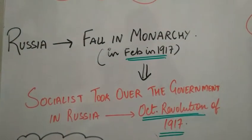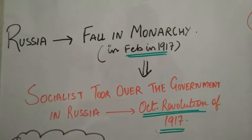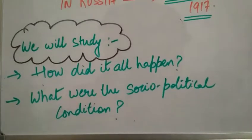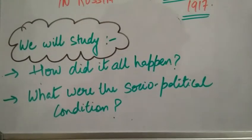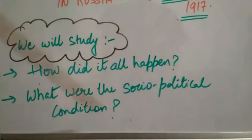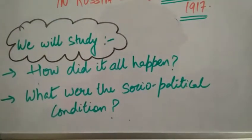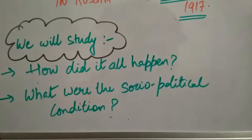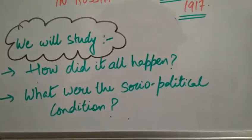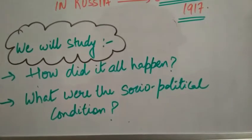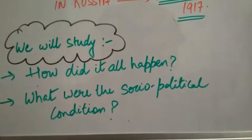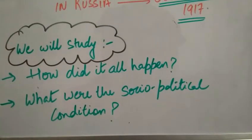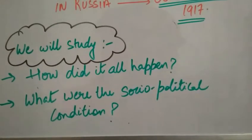To understand how the Russian Revolution came about and what the social-political conditions of that period were, we first need to go through the exact political setup of the Russian Empire around 1914. We'll look at how the empire was set up in 1914, how the monarchy ended in February 1917, and how the revolution came in October 1917.